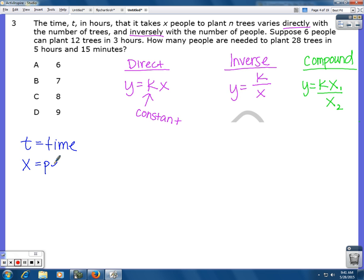T is time. X is the number of people. N is the number of trees. So now I need to go back and rewrite my equation using these variables. So if I look back, it says the time in hours. So I'm going to start with time. My k is my constant. That doesn't change. It varies directly with the number of trees. So that's going to go next to my constant because it's direct variation. And inversely, so that means divided by, inversely with the number of people. So this is the equation that I'm going to be using.